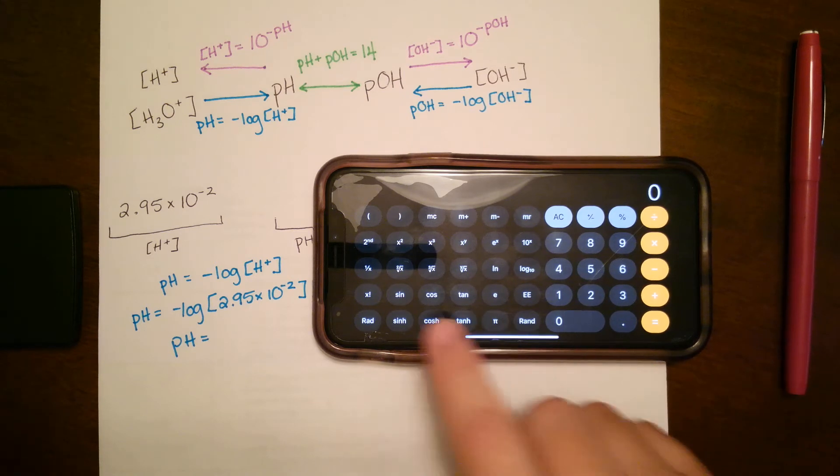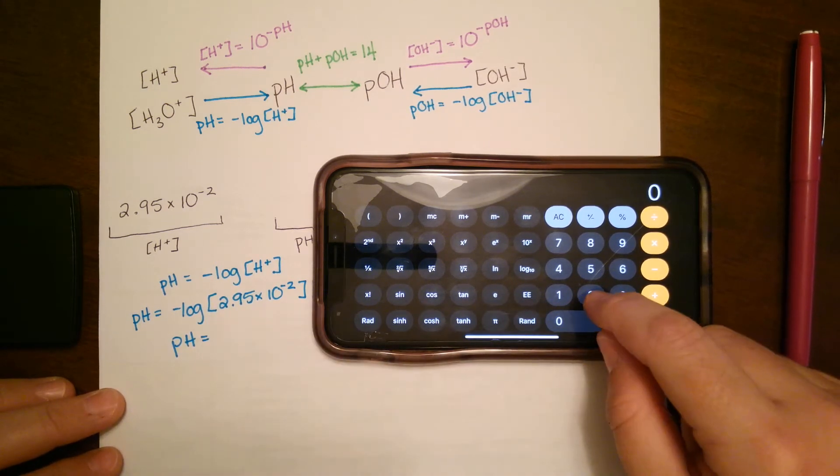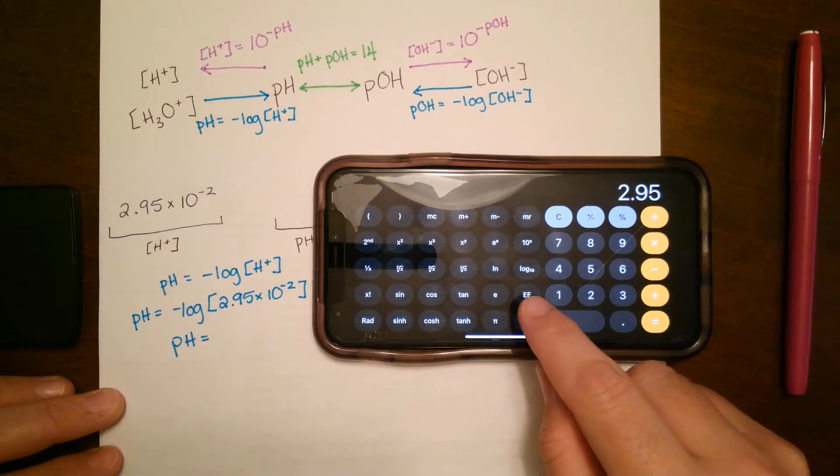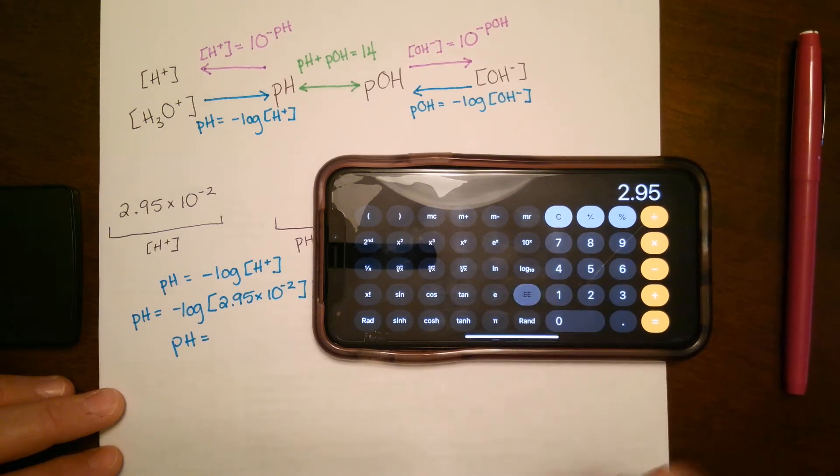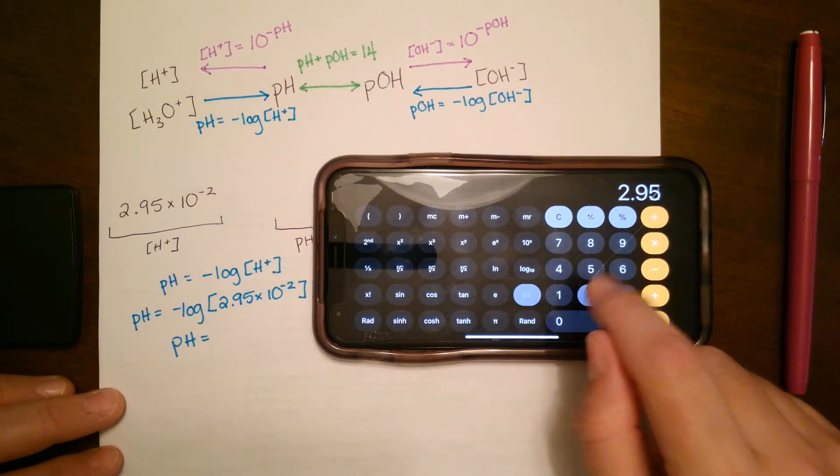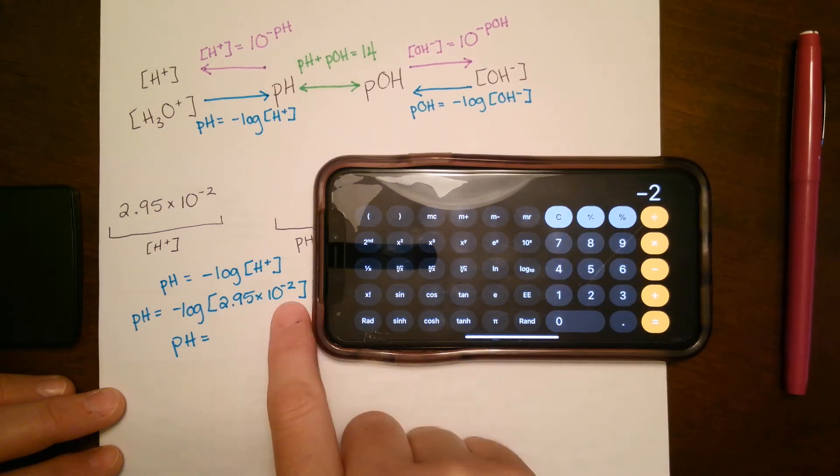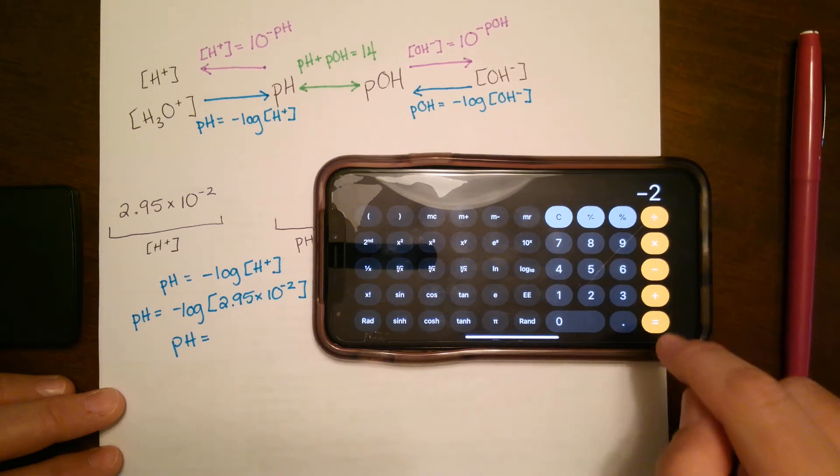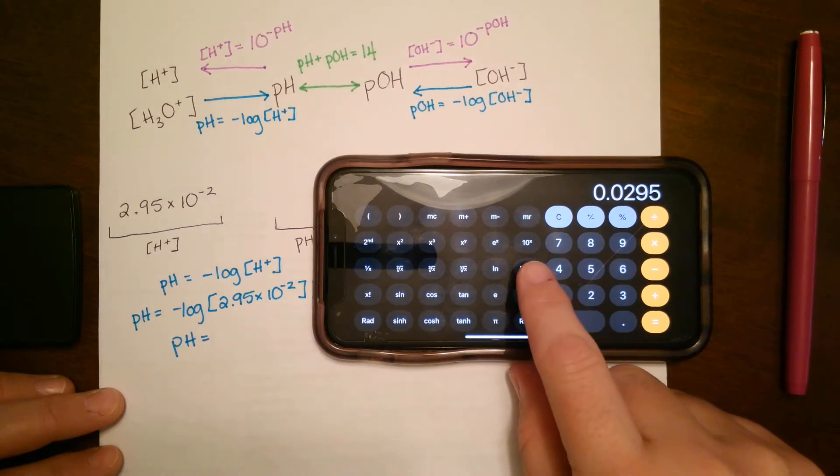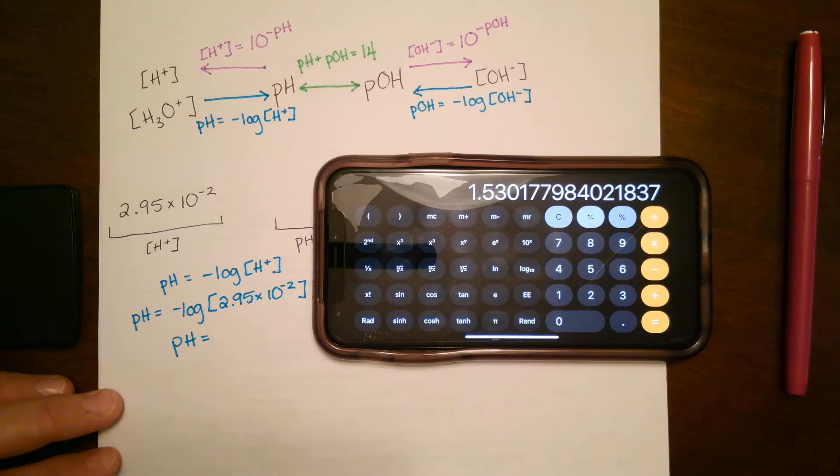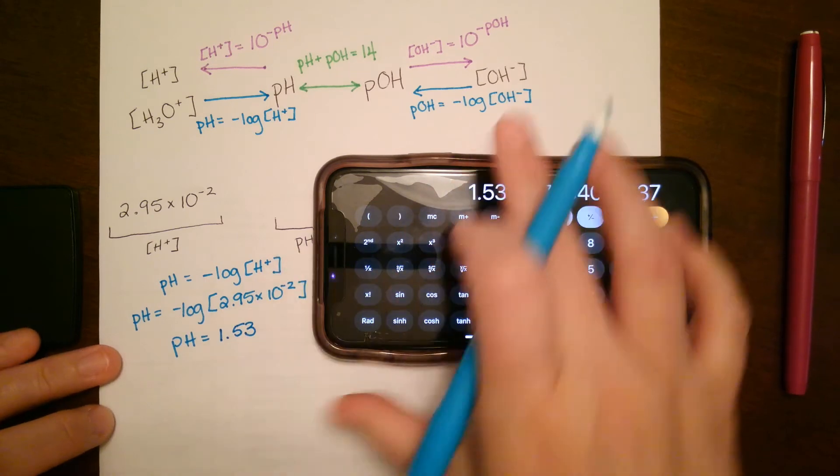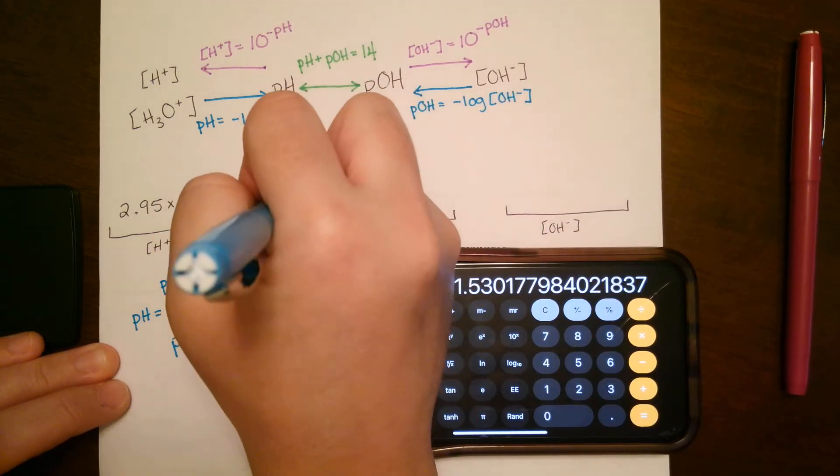So when you're doing this, you're going to do the concentration first. So you're going to say 2.95. And then instead of times 10 to the, you're just going to push that EE key. So it's next to the 1 right there. You'll press EE or times 10 to the. And then 2 negative. So you have that whole thing. And then you can press equal or not. It doesn't super matter. So for this run, I'll say equals. So that is just that number right there. And then you'll press that log base 10 and then hit that negative key to get the pH, which is 1.53. So the pH is 1.53.